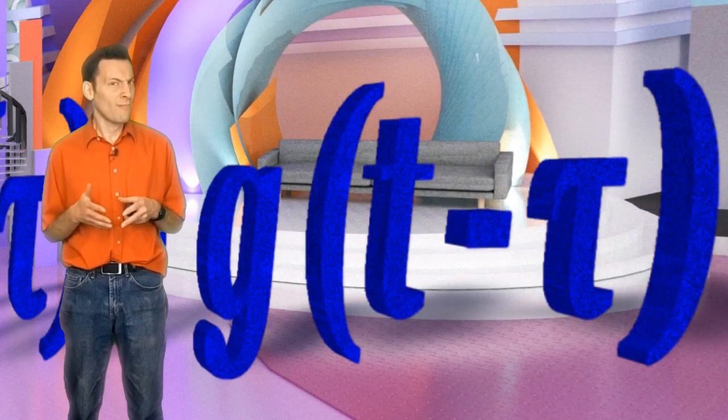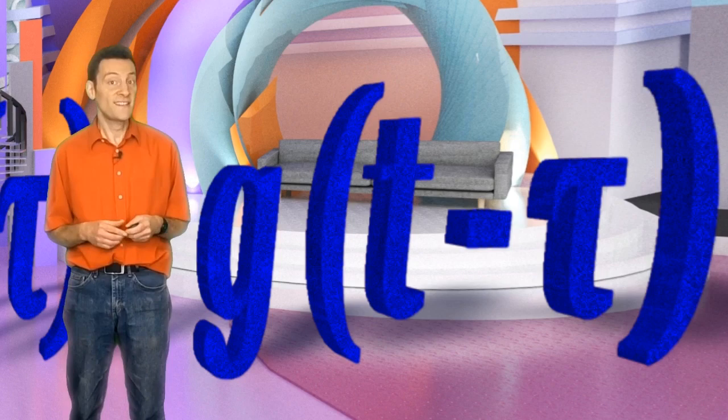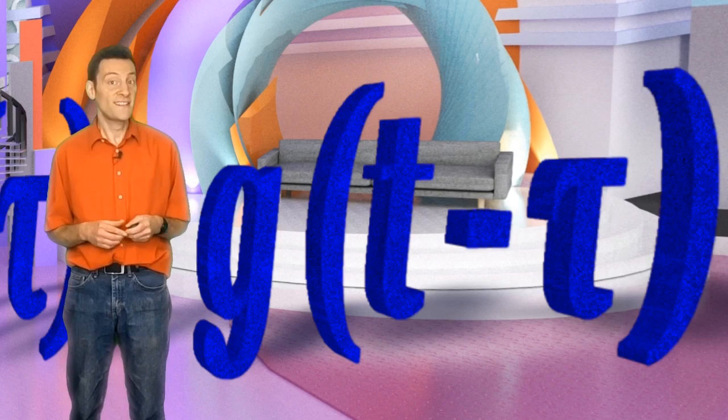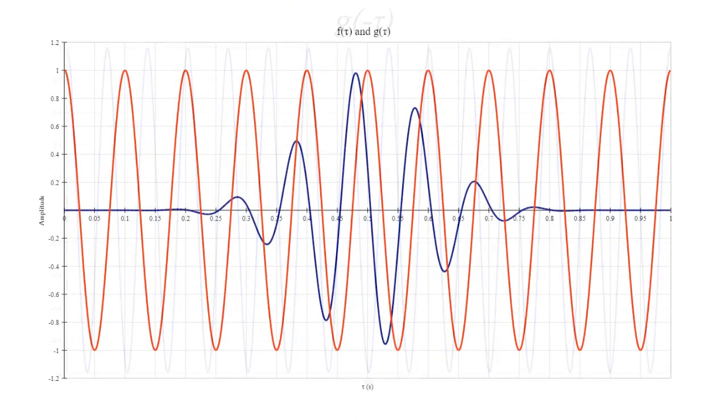Why is it g of t minus tau and not g of tau minus t? Because, for reasons I don't want to go into here, the process of convolution requires that the signal g of tau is reversed, becoming g of minus tau. But our g of tau is a sinusoid. If we reverse it, it looks exactly the same, because a sinusoid is symmetrical.